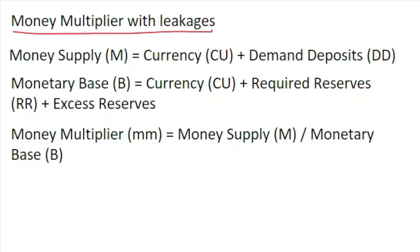We need a few terms to start off with. We define what's called the money supply in the economy — the narrow measure of money supply M — as the amount of currency out in the system: CU plus demand deposits (DD), so deposits that you can take out your money from immediately. That is the narrow version of the money supply.